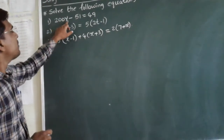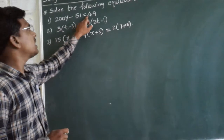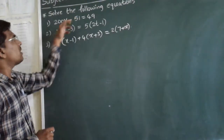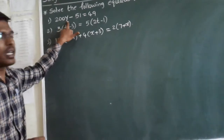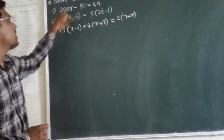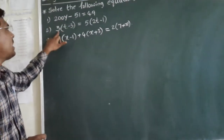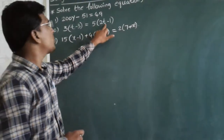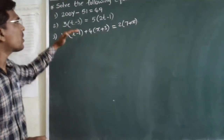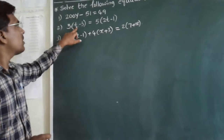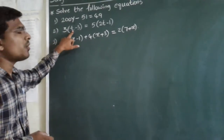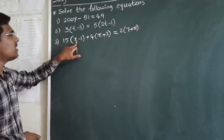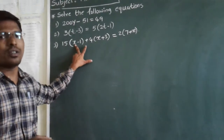In the first equation, 200 times of y minus 51 is equal to 49. Here, if you solve this problem, you should find the value of y — y is the variable. In the second question, 3 times of t minus 3 is equal to 5 into 2t minus 1; you have to find the value of t. In the third question, x is the variable, so you have to find the value of x.